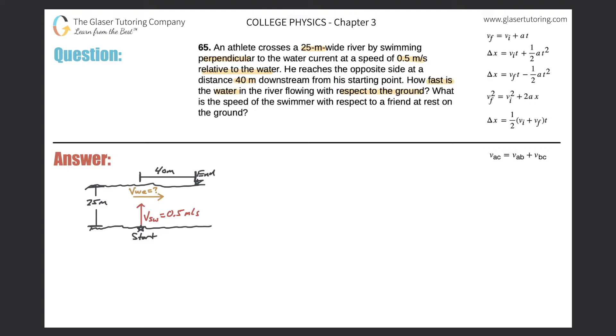So here's a picture. Here's the swimmer. Let's say he's starting at this location and he's swimming at a velocity relative to the water of 0.5 meters per second. There is also a current running, swimming perpendicularly to the current. So there's a current taking him downstream. The width of this river is 25 meters and he ended up 40 meters downstream at the end.